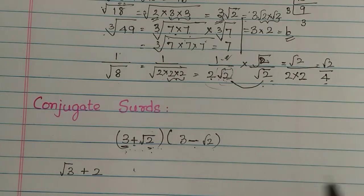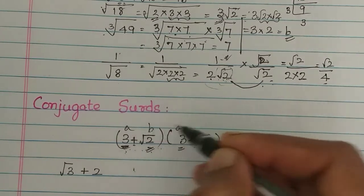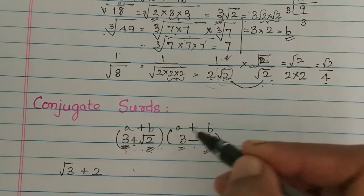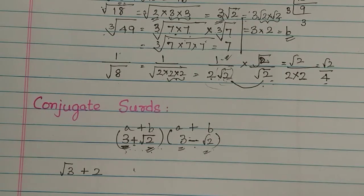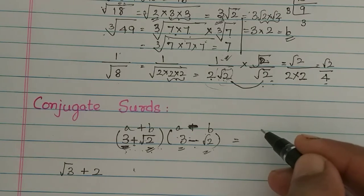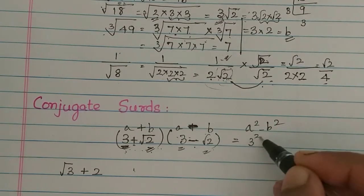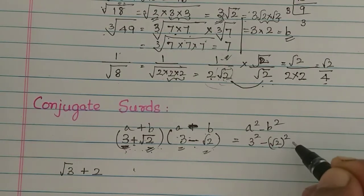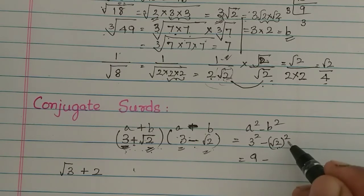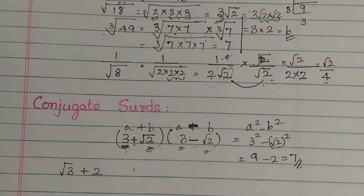So how do we rationalize this? It is very simple. Here a is 3 and b is root 2. There is a plus symbol here and a minus symbol there. So a plus b into a minus b — here is the third algebraic identity — that means a squared minus b squared. So a squared is 9, minus root 2 squared equals 2, which gives 7. We multiply by the conjugate and then we rationalize.